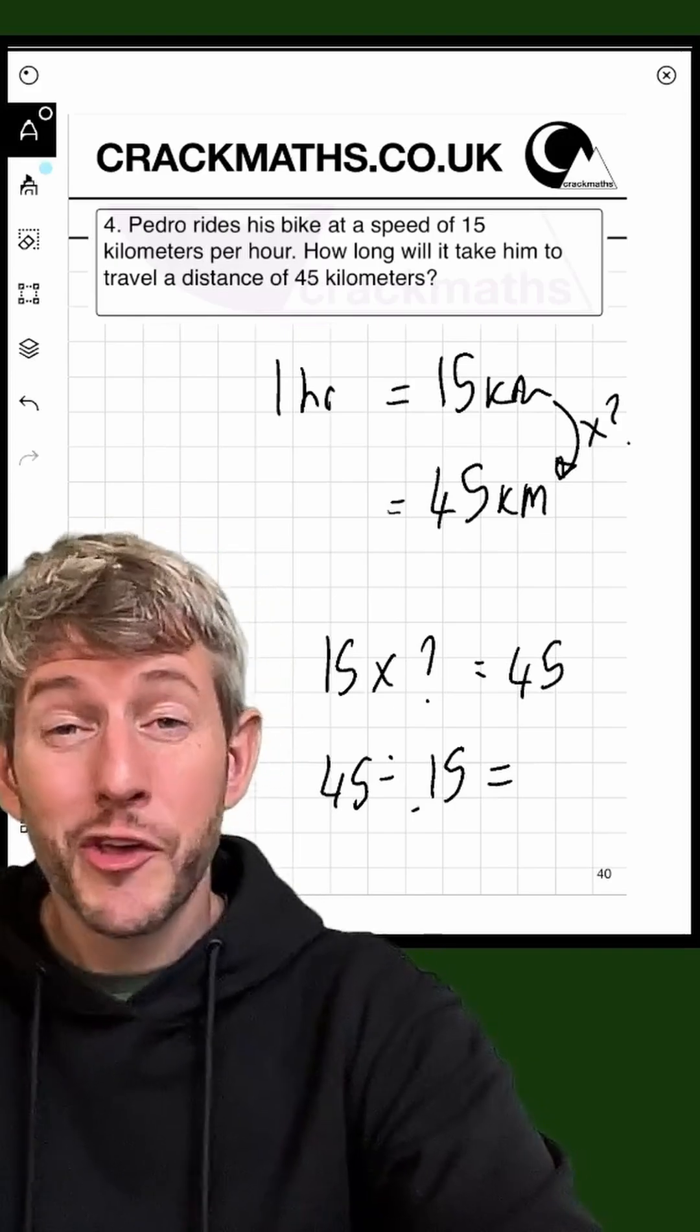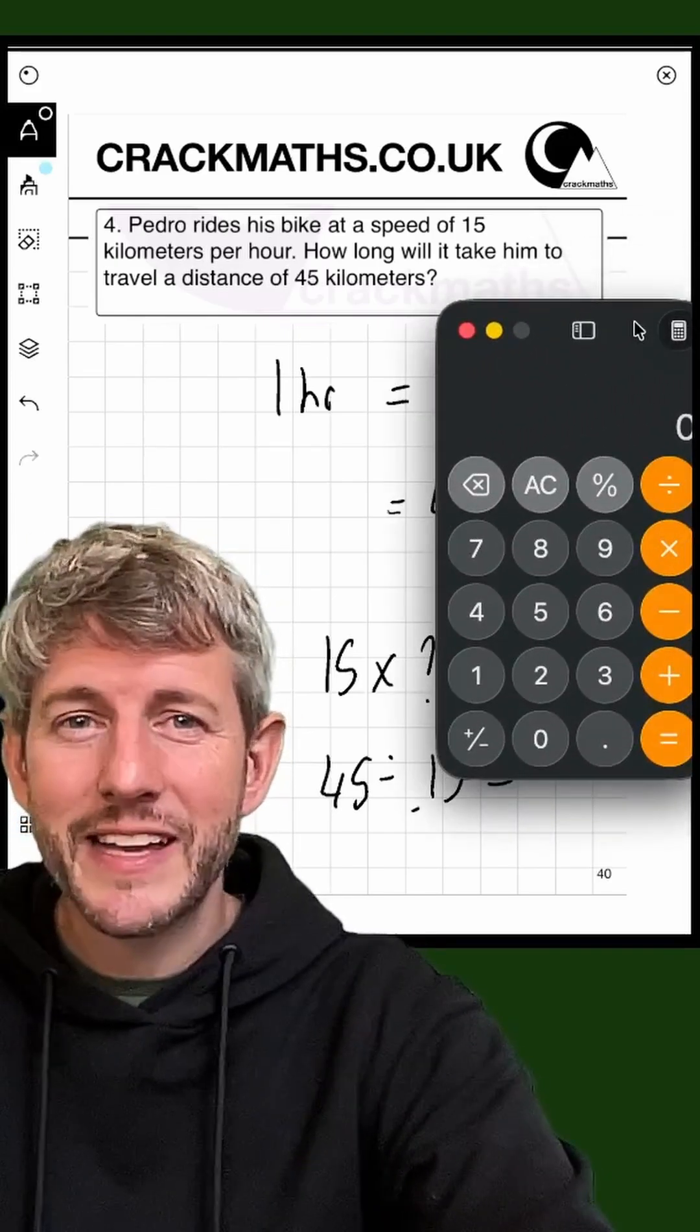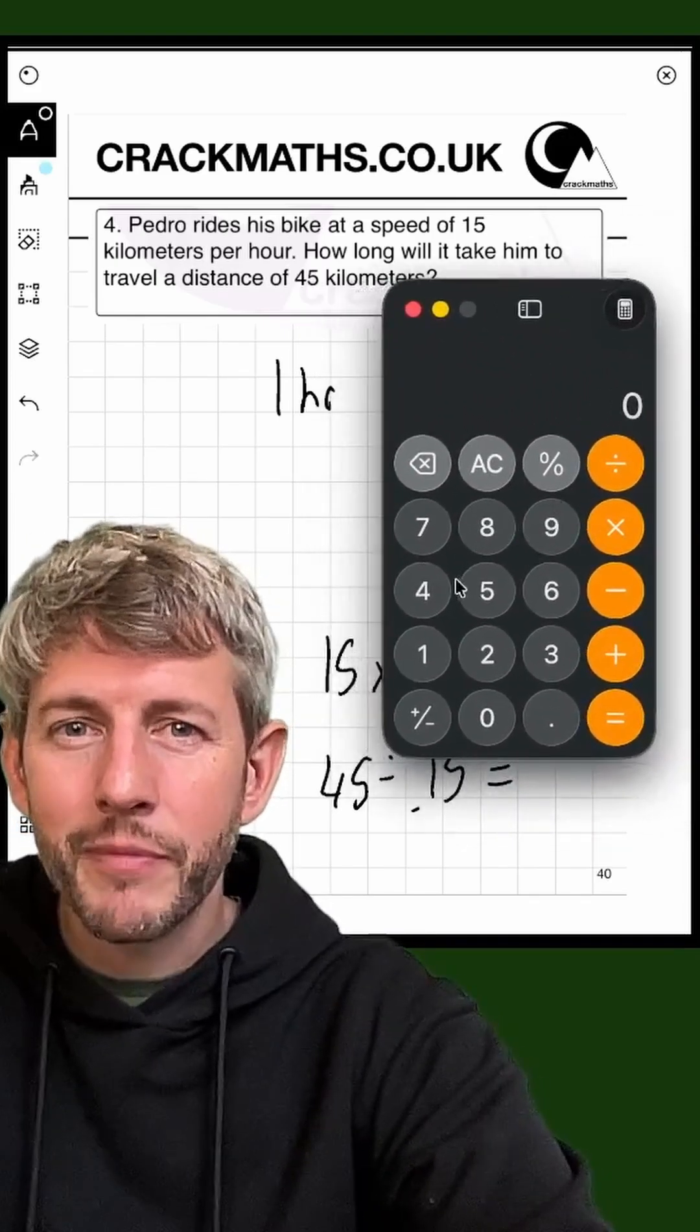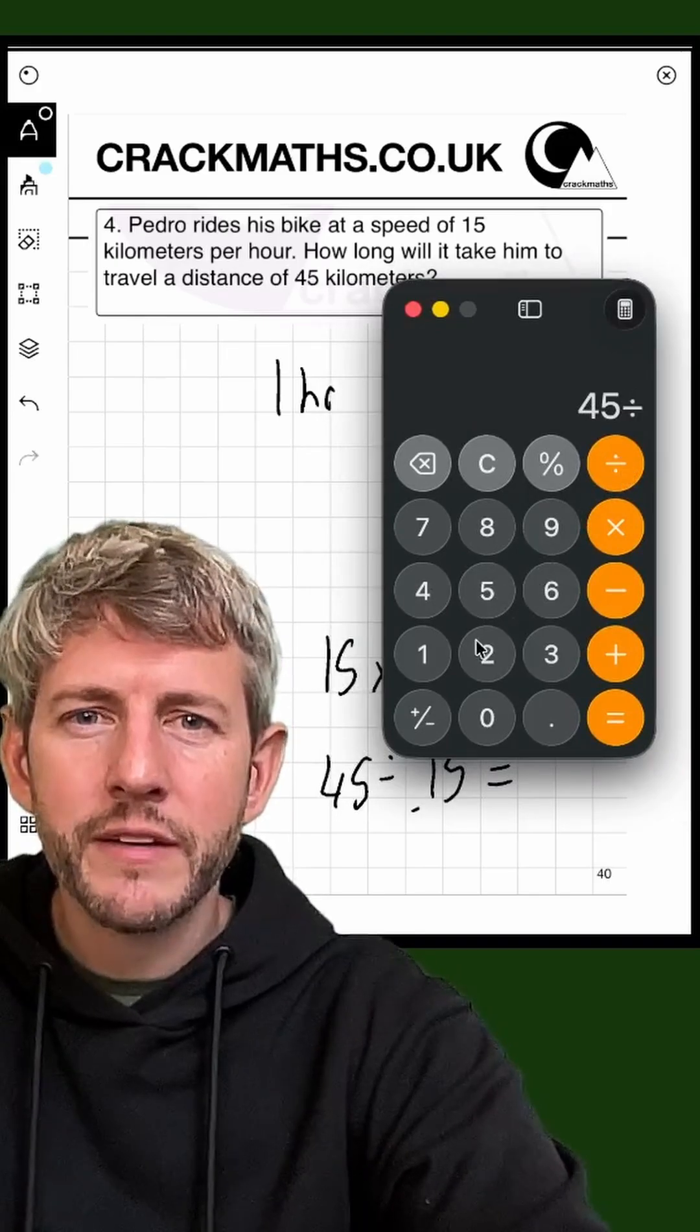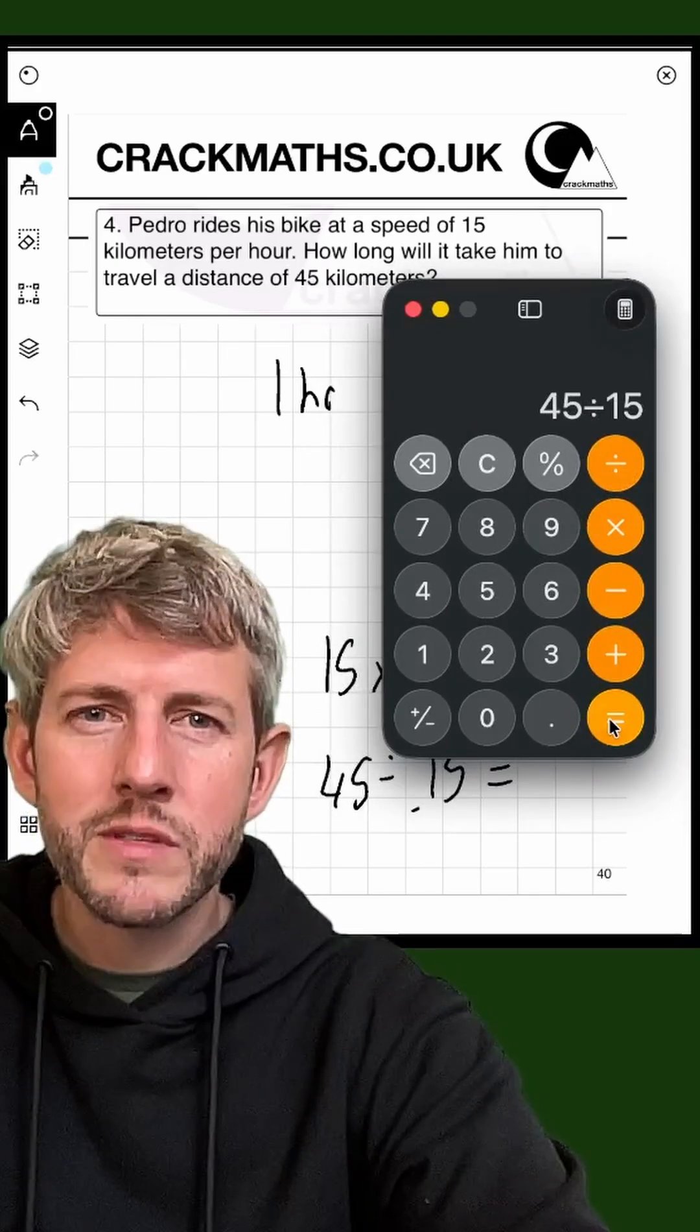So let me get my calculator out for this. You might know it, but I'm going to use the calculator anyway because usually we're allowed. 45 divided by 15 equals 3.